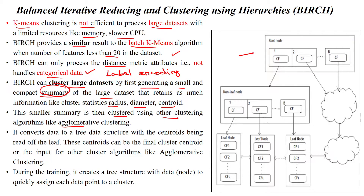Here are the given data points. The data points are clustered by using the summary, where each data point has its summary and will be clustered into smaller clusters. Agglomerative clustering is used for further clustering.